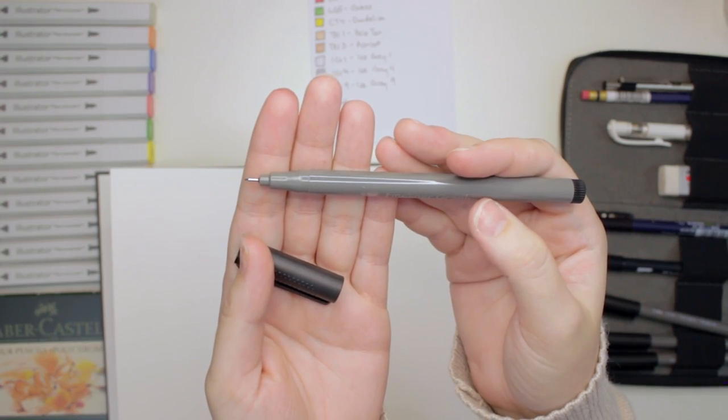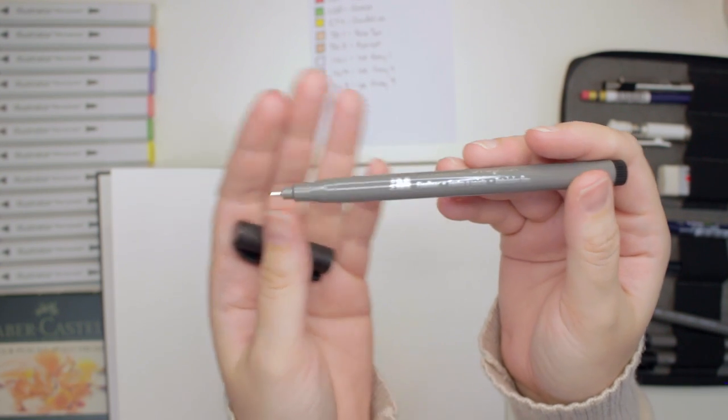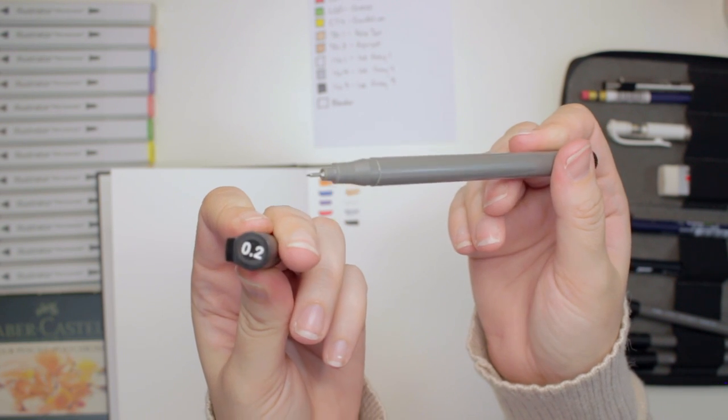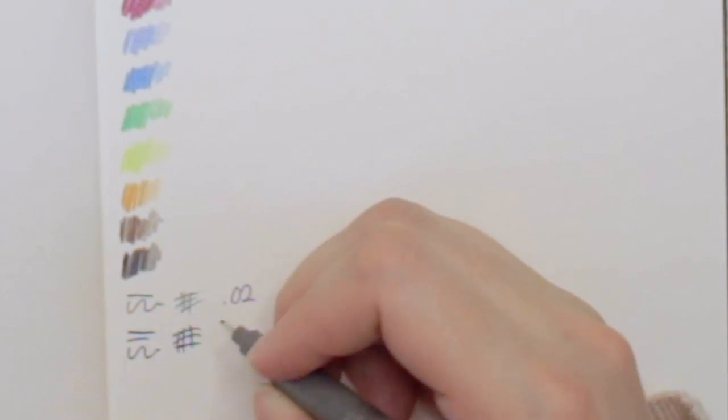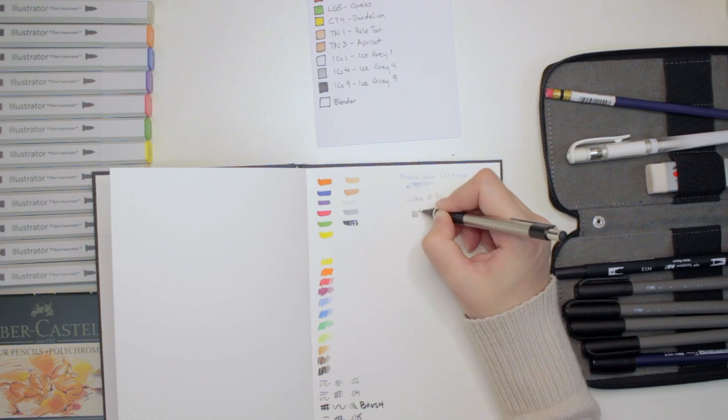So I just noticed something on these fineliners. On the barrel of the pen, they don't have anywhere what the size of the nib is. So if I forget, I'm liable to put it on the wrong one.